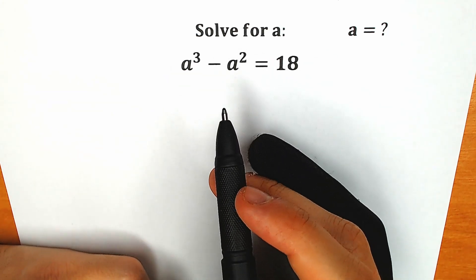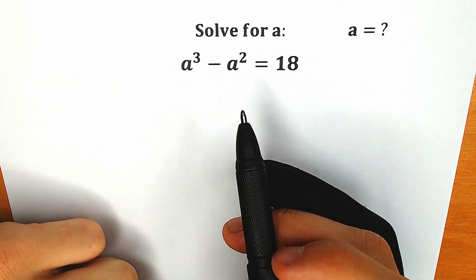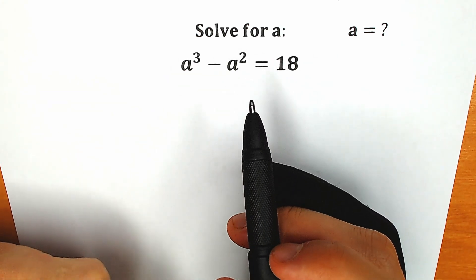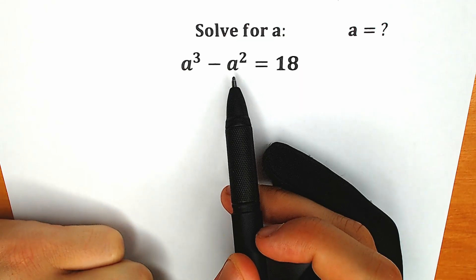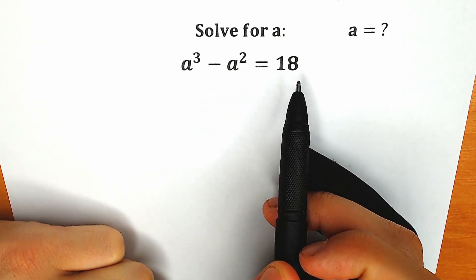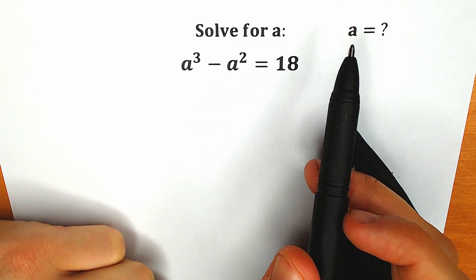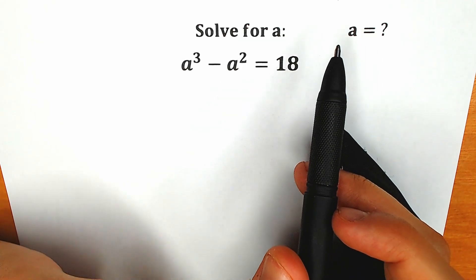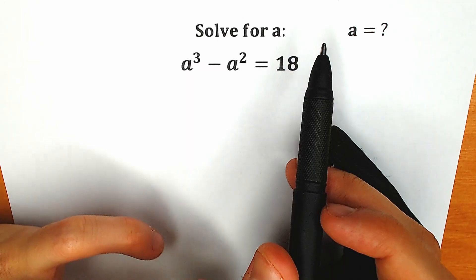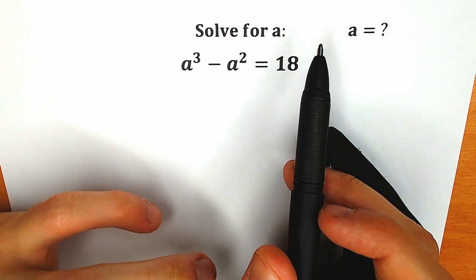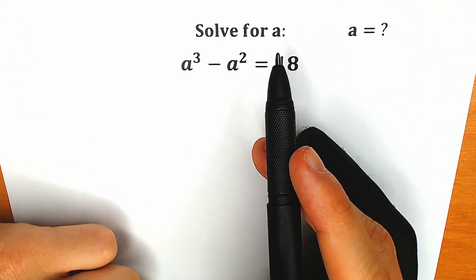Hello everyone, happy to see you here. Welcome back to my channel, Higher Mathematics. Today we have a very interesting equation: a cubed minus a squared equals 18. We need to solve this for a. If you have your solution, your approach, your answer, you can write it in the comments below and then we will check your answers.